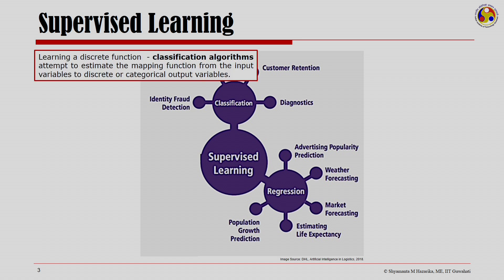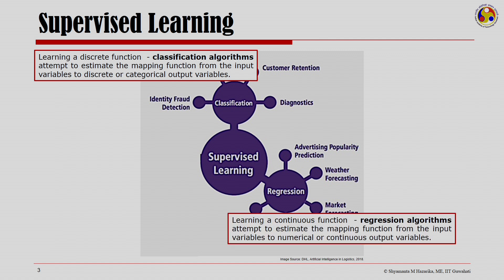Classification is about getting to the categories of the output variables — it is about learning a discrete function to estimate the mapping from input variables to discrete or categorical output variables. Whereas regression is about learning a continuous function and is an attempt to estimate a mapping function from input variables to numerical or continuous output variables. Our focus today is to look at how, given an explanatory variable x (the independent variable), we predict y, the dependent variable, for numerical or continuous variables.